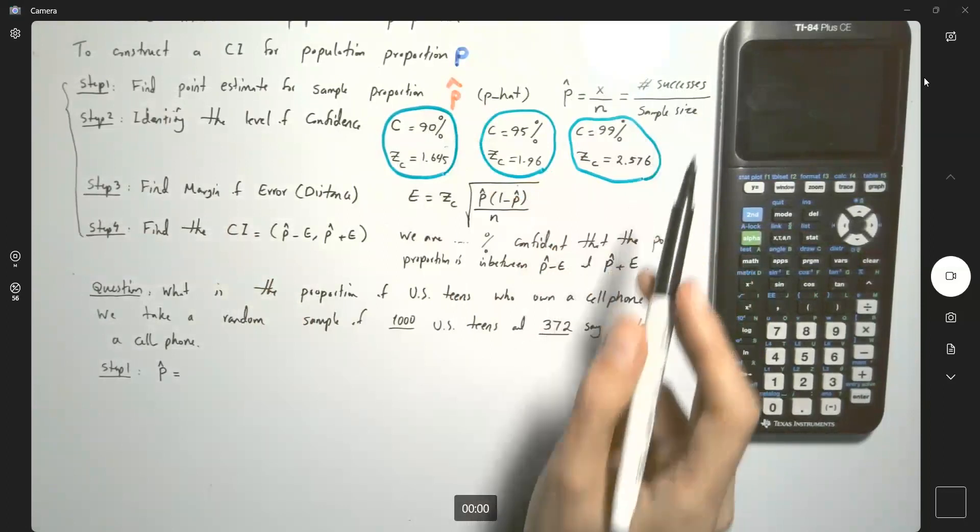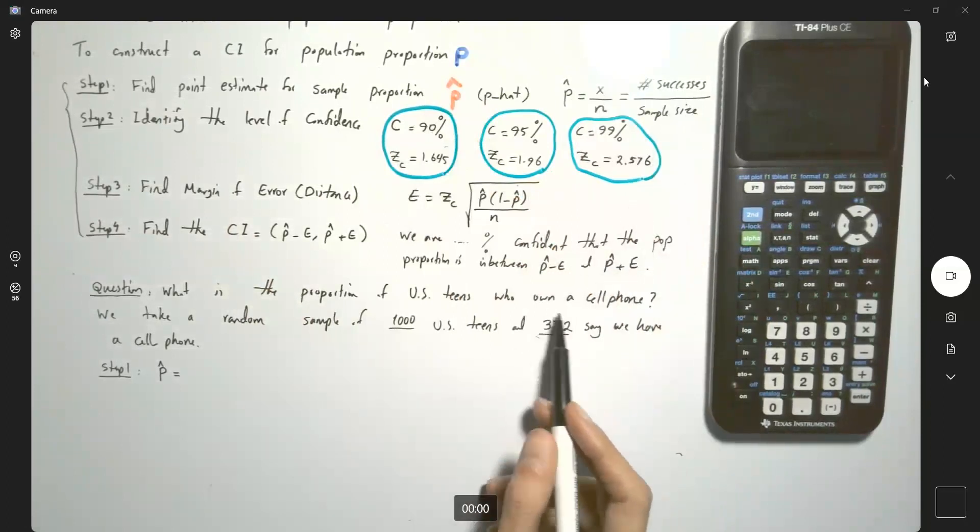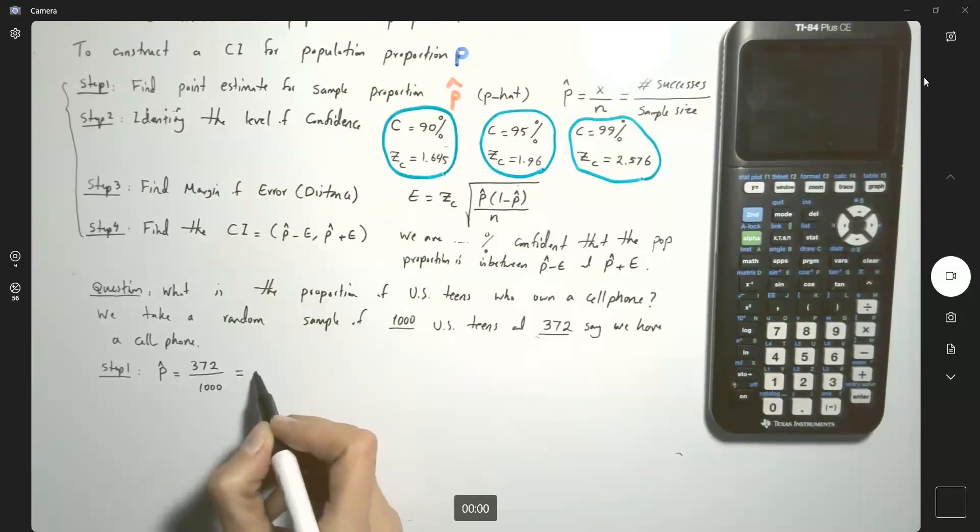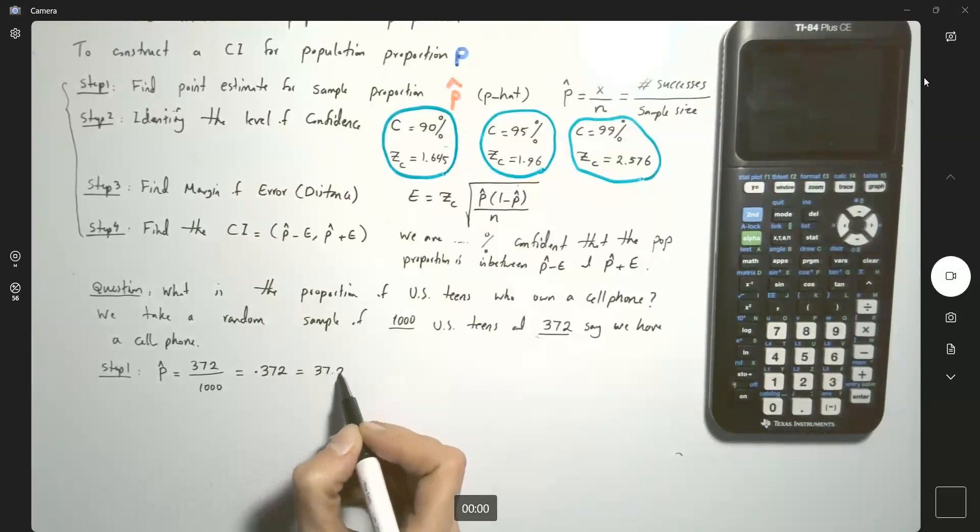The number of successes is the number of U.S. teens who said I own a smartphone. So 372 divided by a thousand, which is going to be 0.372 or 37.20%. This is your point estimate from one random sample.